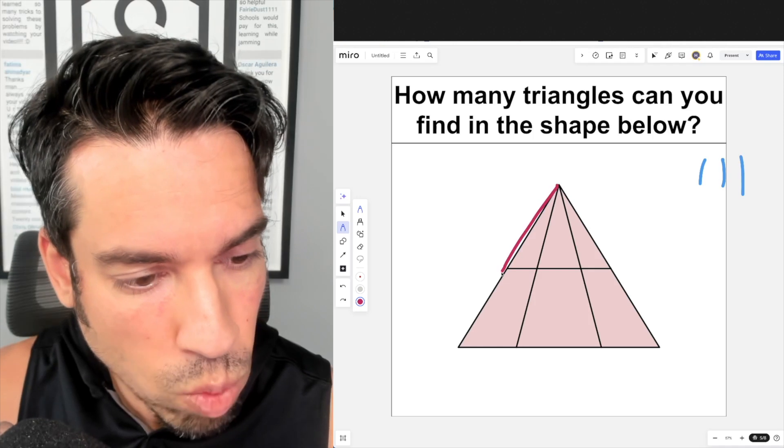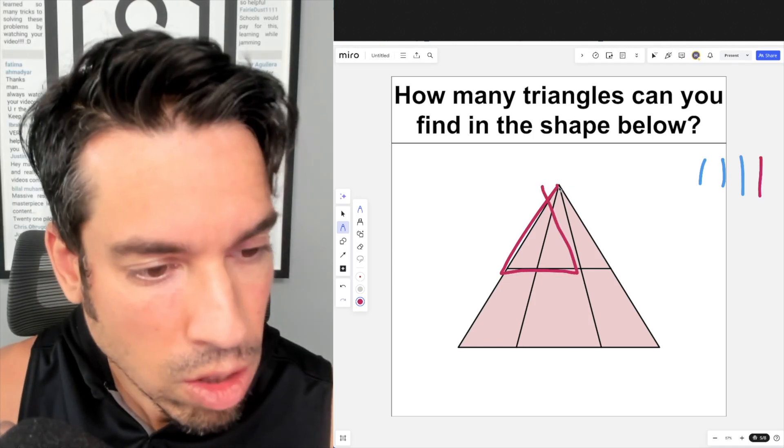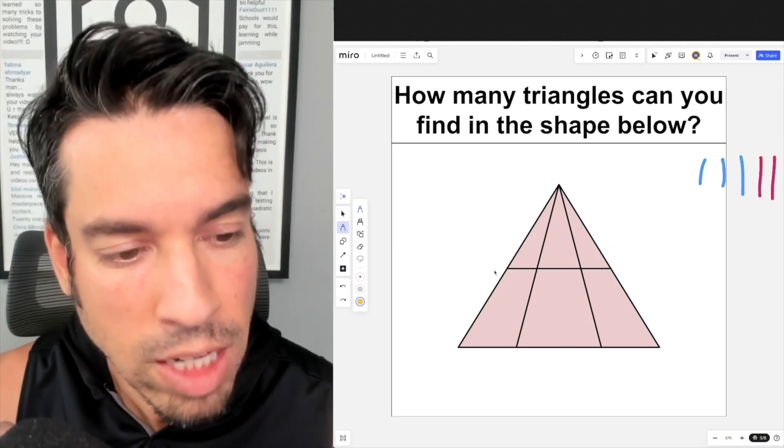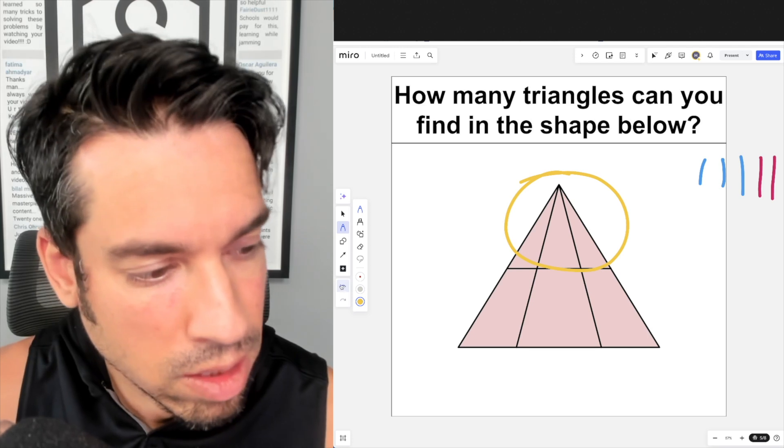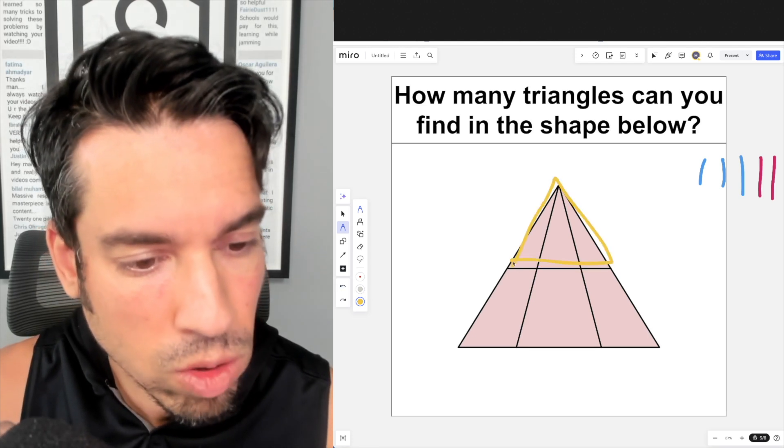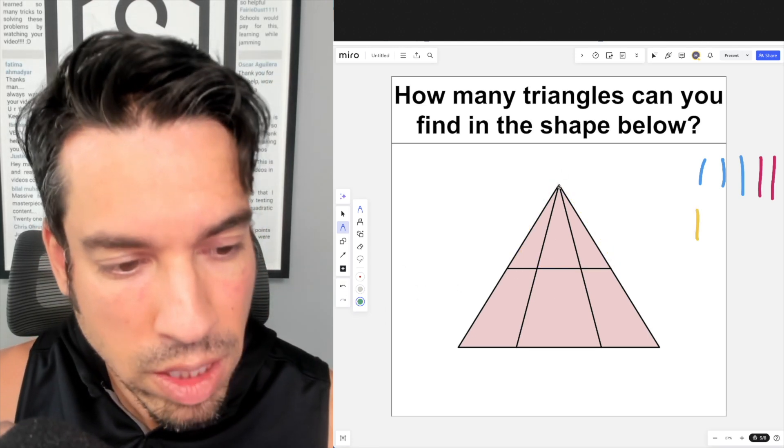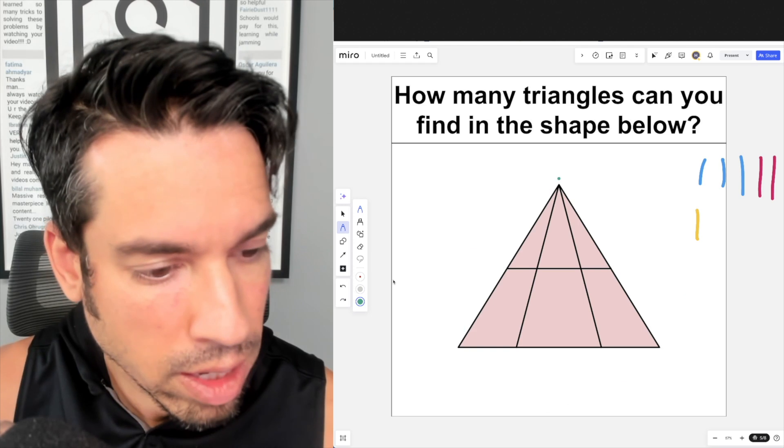Now we're going to move on to the larger triangle. I see this sliver right here as one, this one as two, and this one as three. Similar to what we did up top in this triangle where we expanded to slightly larger ones, we're going to do the same thing here.